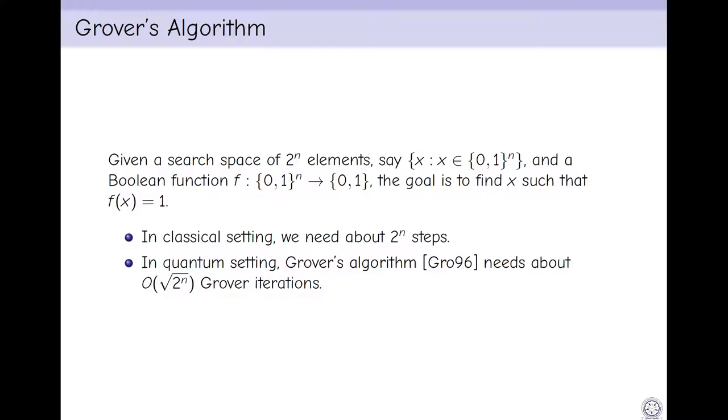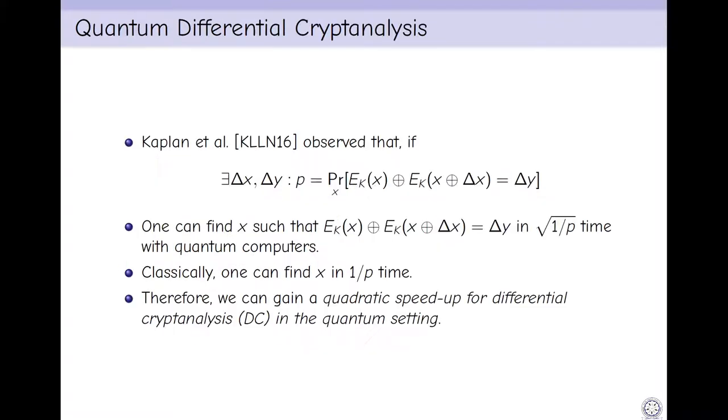Next, we discuss Grover's algorithm which we use extensively in our work. Given a search space of 2^N elements and a boolean function F, the goal is to find x. In the classical setting we need about 2^N steps, while in the quantum setting Grover's algorithm needs about √(2^N) queries. Observe that there exists Δx and Δy such that p equals the probability of EK(x) = EK(x⊕Δx)⊕Δy. One can find such an x using Grover's algorithm in √(1/p) time with quantum computers. Classically, one can find such an x in 1/p time.